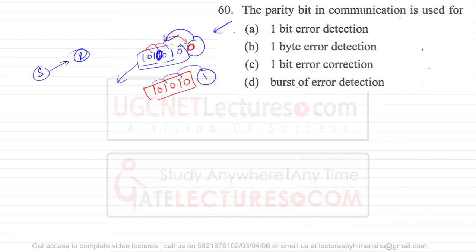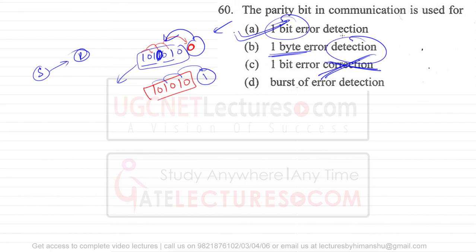Parity is used to find whether an error is present or not. For question 60, parity is used to detect errors — specifically one-bit error detection. Error correction is not correct here; it is error detection. We cannot have one-byte error detection; it is one-bit error detection. Option A is the correct answer for question 60.